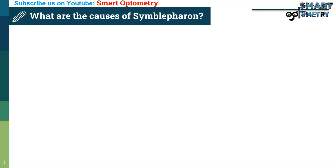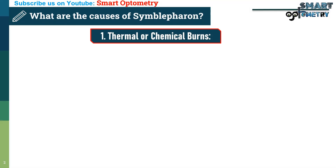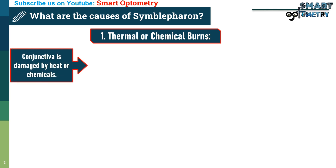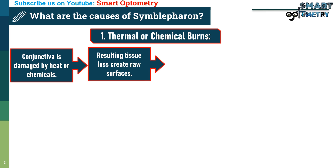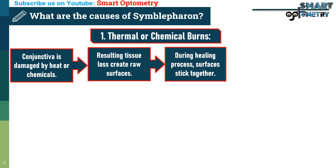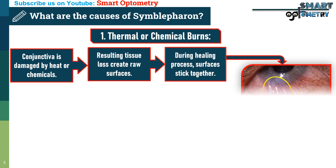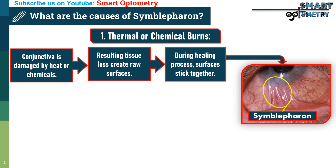What are the causes of Symbolpheron? 1. Thermal or Chemical Burns: when the conjunctiva is damaged by heat or chemicals, the resulting inflammation and tissue loss create raw surfaces. During the healing process, these surfaces stick together, forming fibrous adhesions.